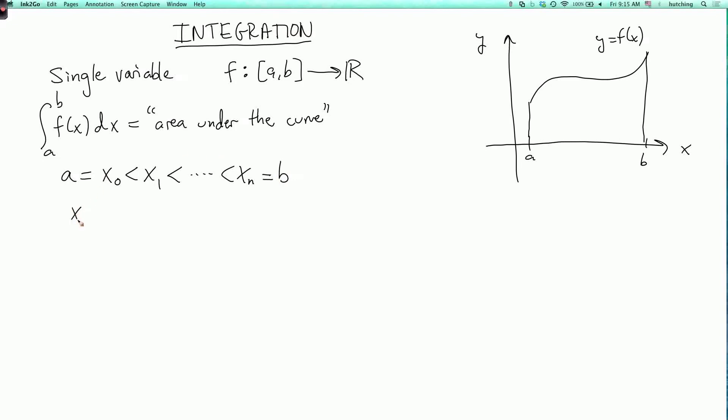And the difference between any two of these is 1 over n of the total distance. So xi minus xi minus 1 equals b minus a over n. Let's call this number delta x.